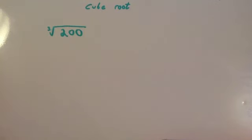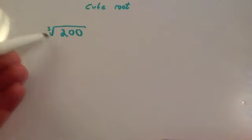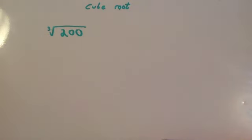In the last example, we're going to look at how to find the cube root of a number that isn't a cube number. So we're going to look at what is the cube root of 200.